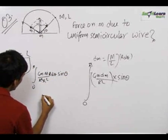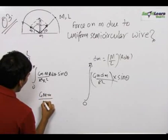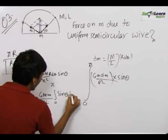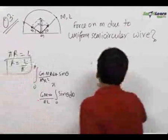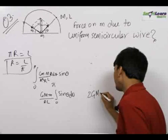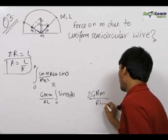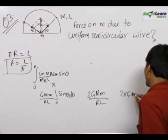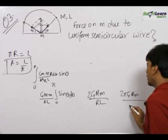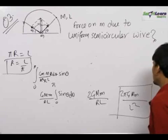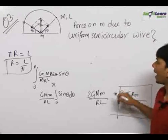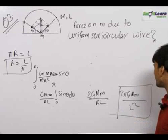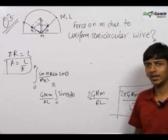This equals (G m²)/(r l) · ∫₀^π sin θ dθ, which evaluates to 2Gm²/(r l). Now substituting r = l/π, this becomes 2πGm²/l². So the final force acting on small mass m due to the uniform semicircular wire is equal to 2πGm²/l² in the upward direction.